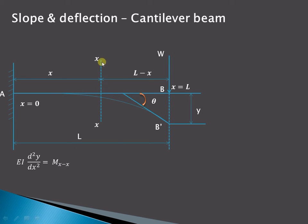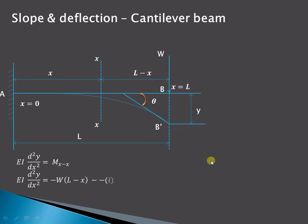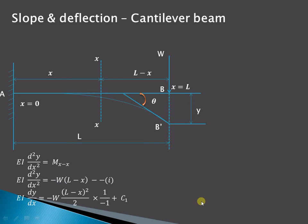On the right hand side of this section there is only one load W, and W multiplied by the perpendicular distance (L minus x) gives the moment. As it is producing a clockwise moment about this section, by our sign convention clockwise moments are negative, so it is minus W into (L minus x).